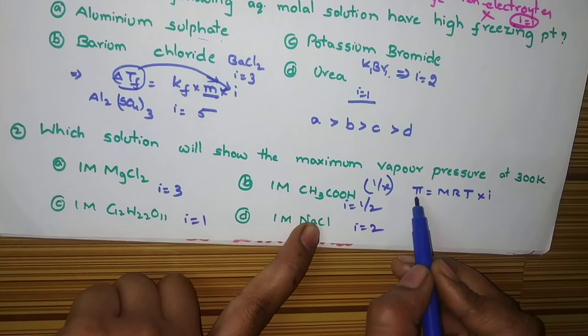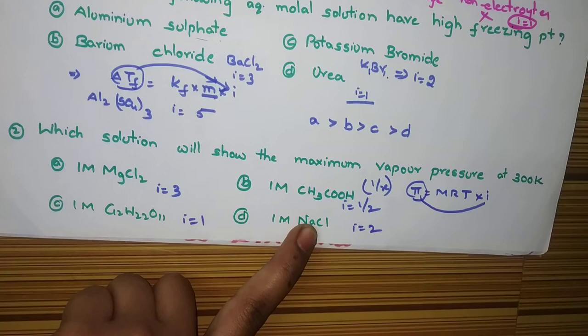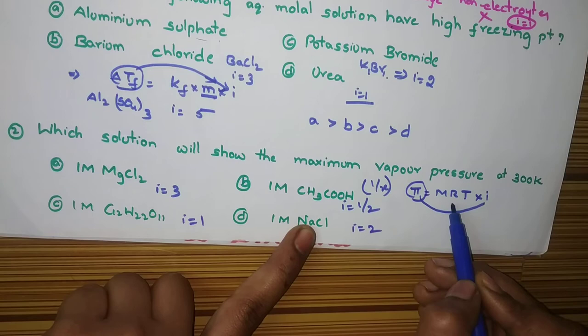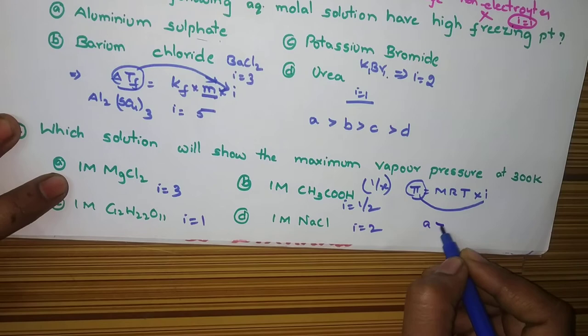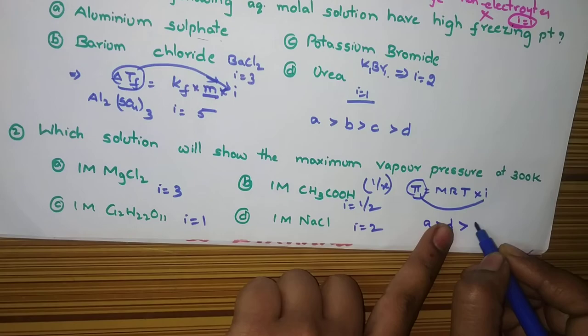So, here, pi value will depend upon i. Because, same temperature. R value is same. Universal gas constant. And, M is, for all, all the 4 options are 1 molar. So, which of the following as high? So, A is greater than D is greater than C is greater than B. That's it.